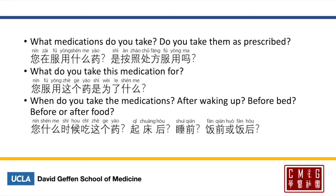Here are some terms you can use to discuss medications with your patient. To ask 'What medications do you take? Do you take them as prescribed?' that would be 您在服用什么药? 是按处方服用吗? — prescription is 处方, and 按照 meaning following. 'What do you take this medication for?' 您服用这个药是为了什么? 'When do you take this medication?' 您什么时候吃这个药? After waking up — 起床后. Before bed — 睡前. Before or after food — 饭前或饭后. For three or four times a day, that would be 一天三次 or 一天四次.